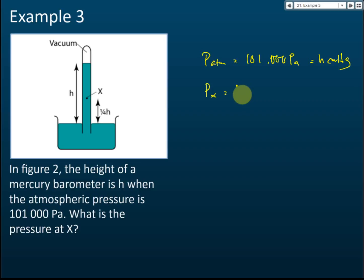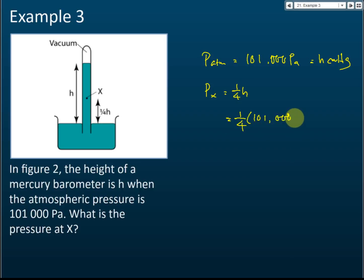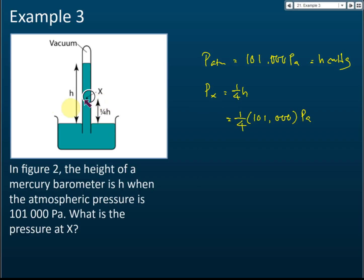The pressure at x is equal to one-quarter h. And h mercury is equal to 101,000 pascal, because h is equivalent to 101,000. But this is just a quarter of h — one-quarter h — and this one-quarter is measured from the bottom.